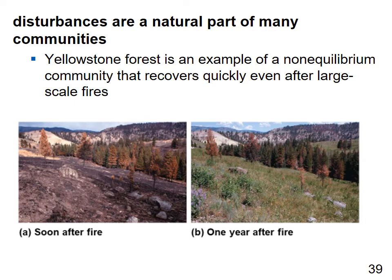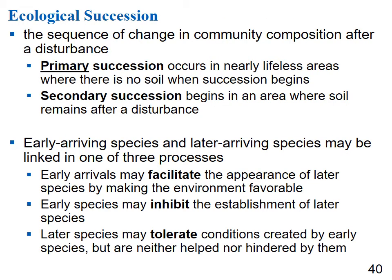Disturbance is a natural part of many communities — Yellowstone is a good example, recovering quickly even after large-scale fires. Ecological succession is the sequence of changing community composition after a disturbance. Primary succession occurs where there is no soil yet; secondary succession occurs where soil is already present. Early-arriving and later-arriving species may be linked: early arrivals may facilitate later species, inhibit them, or later species may simply tolerate conditions created by early ones.